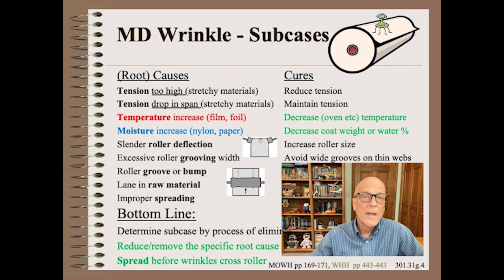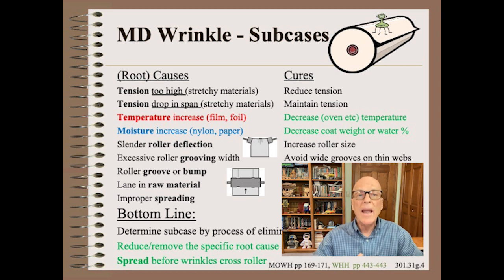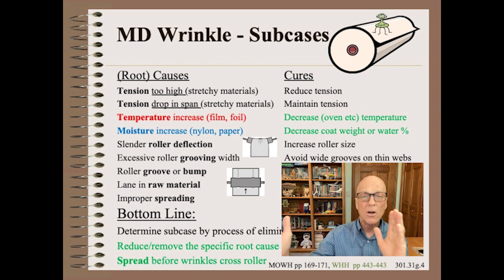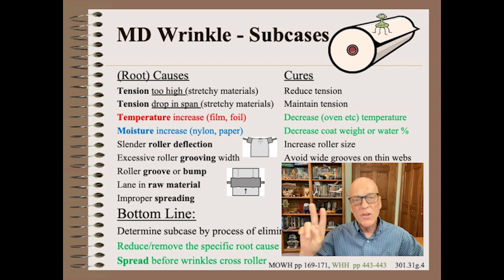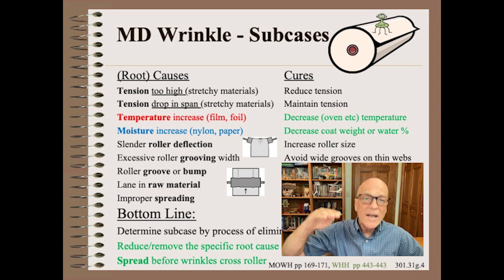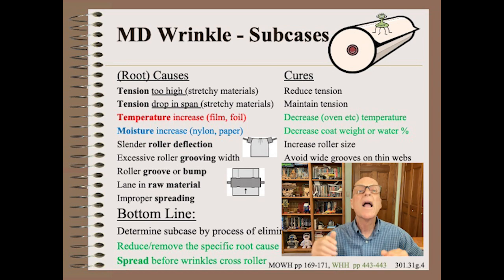If you had taken my award-winning and trademarked Web 101 class, which has been taken by 5,000 people, you would know that the MD wrinkle is one of six major cases. Within the MD wrinkle major case are a dozen sub-cases, or root causes if you prefer. Note that all are related to excess width. The two we will single out here are due to thermal and/or hygroscopic expansion. The solution options include turning down the oven temperature or reducing coat weight, respectively, and/or effective spreading.